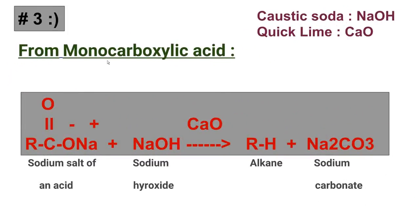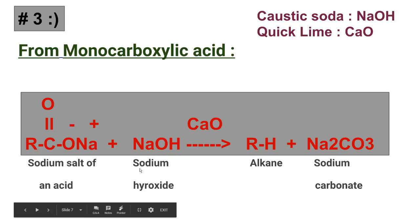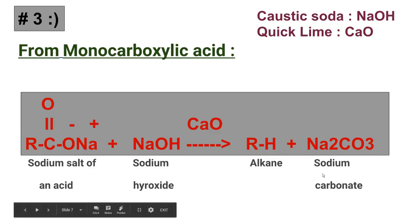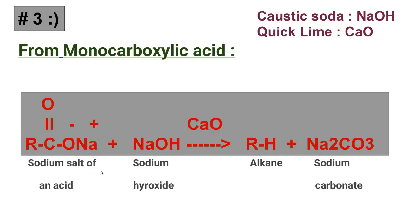Now let's see the third process: preparation of alkane from monocarboxylic acid. Caustic soda is sodium hydroxide, and calcium oxide is quicklime. The mixture of both is known as soda lime, which is used practically because sodium hydroxide is very corrosive and can cause serious burns. The sodium salt of an acid reacts with sodium hydroxide to form alkane and sodium carbonate. When sodium salts of fatty acids are heated with soda lime, they eliminate a molecule of carbon dioxide to form alkanes.